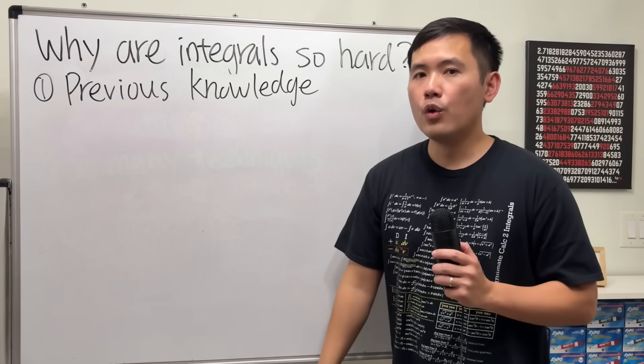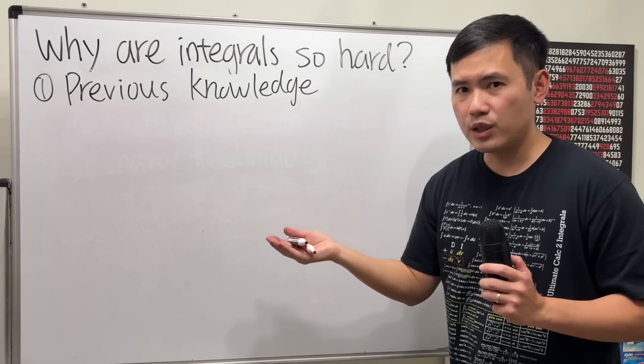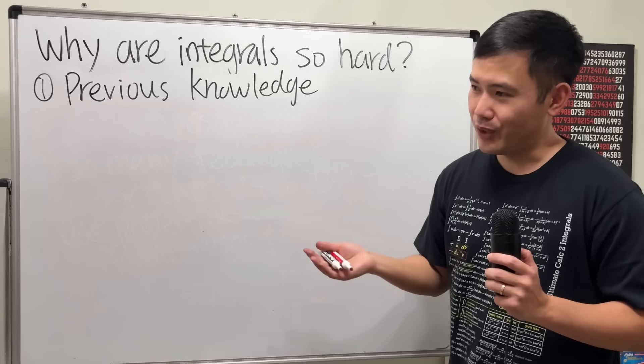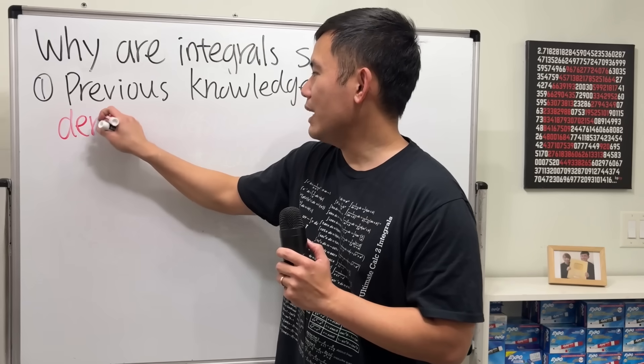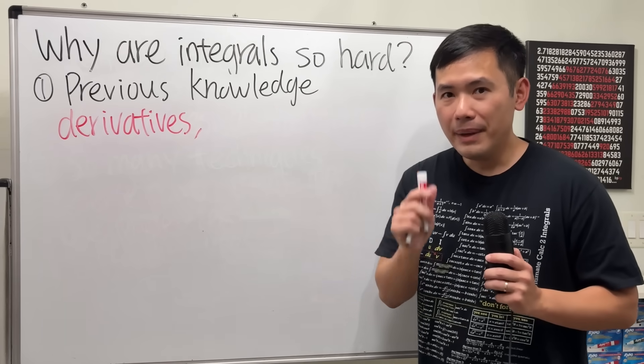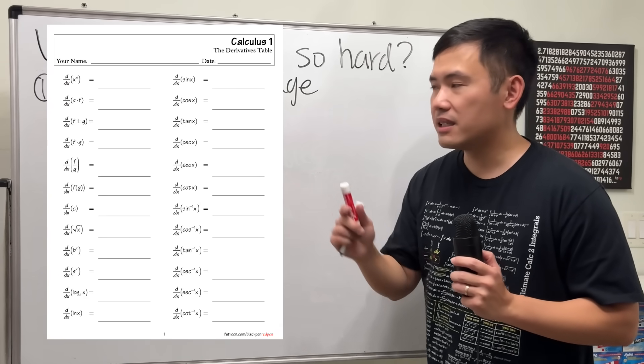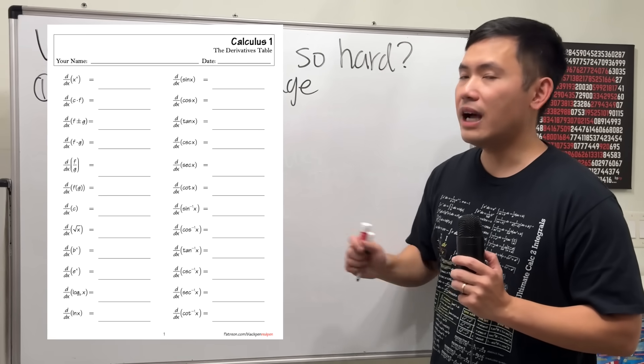We definitely have to maintain a lot of the previous knowledge. For example, when we are trying to do an indefinite integral, we are just trying to find an anti-derivative of the function. And how do we find an anti-derivative? Well, we better know the derivative first. Therefore, we have to remember all the derivatives that we did in Calc 1. Make sure you guys have something like this, a derivative table. Better yet, a blank one so you can test yourself to see if you have remembered them or not.